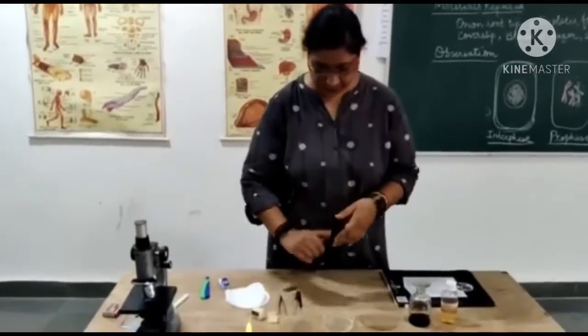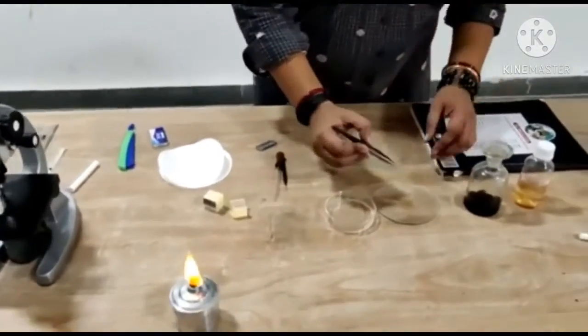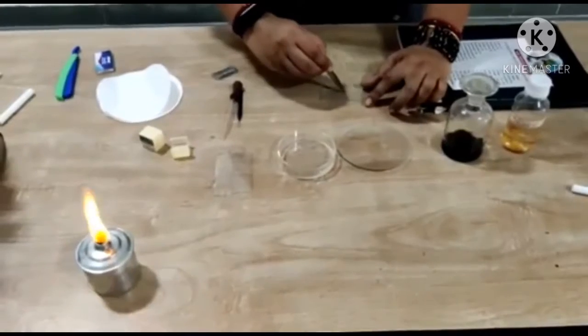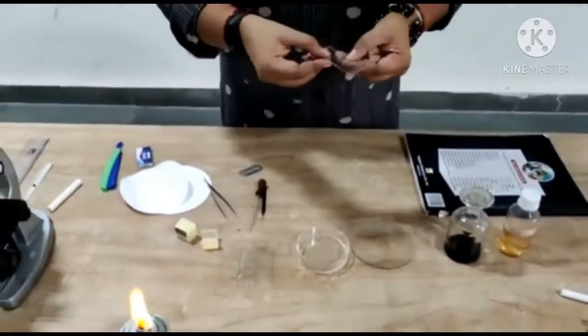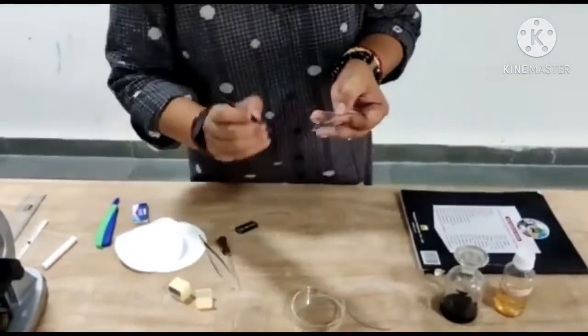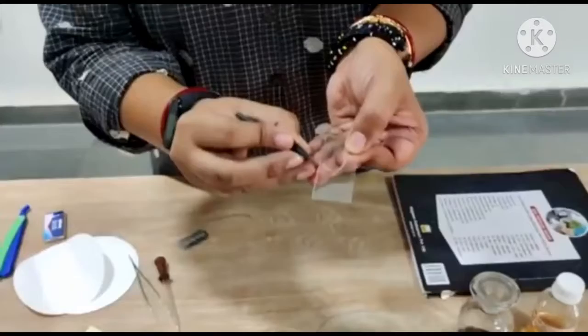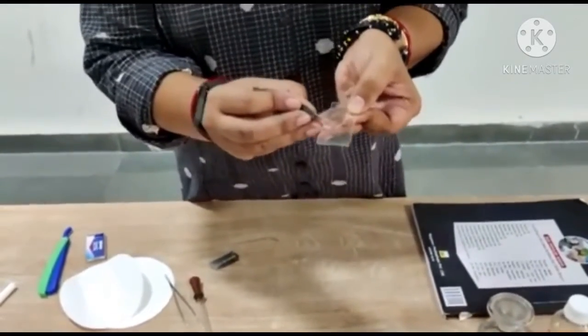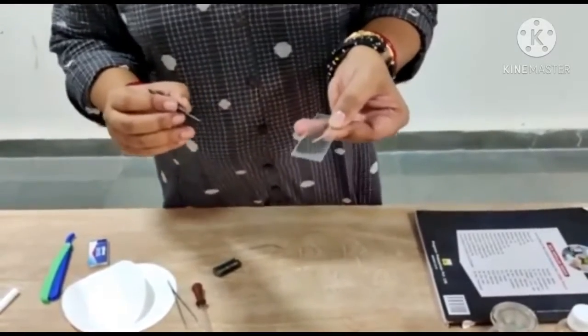Let us see the procedure. First of all, we take root tip of onion on the clean slide. In this slide, we can see there is the root cap portion. We have to remove the root cap portion and observe the tip portion, which is the meristematic zone. In this meristematic zone, the cells are in continuous state of division.